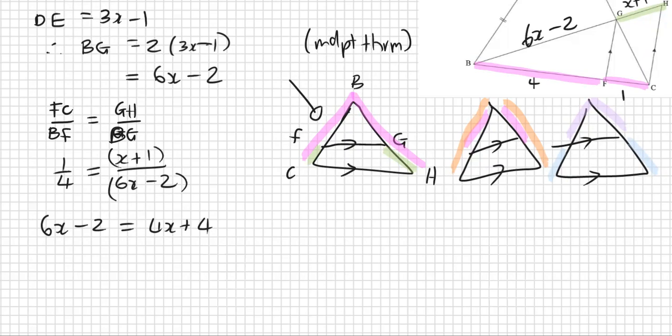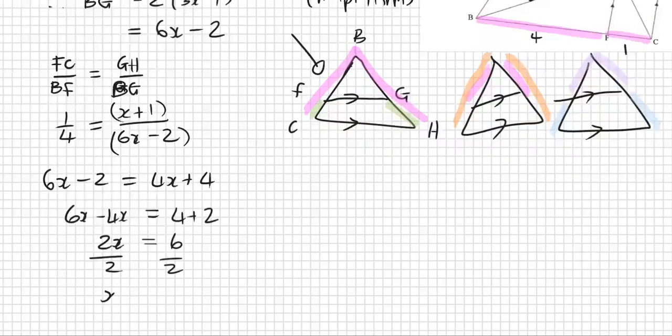Bring all the x's to the left minus four on both sides. So 6x minus 4x. And bring all the numbers, the constants, to the right plus two on both sides, four plus two. So we end up with 6x minus 4x is 2x is equal to four plus two, which is six. Divide both sides by two. This cancels out on the left. So x is equal to three. And this is using prop theorem.